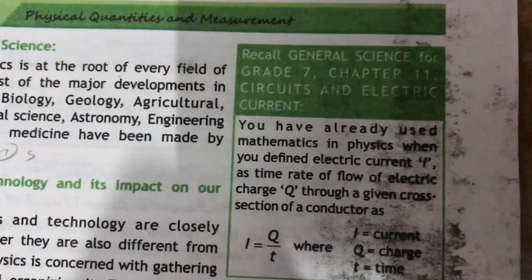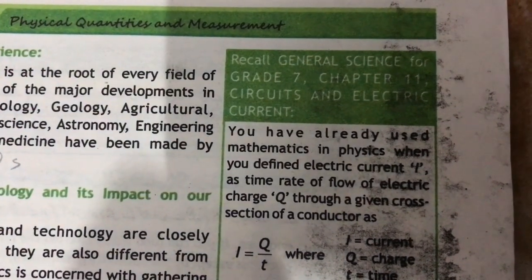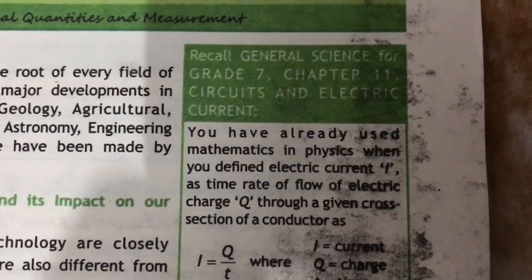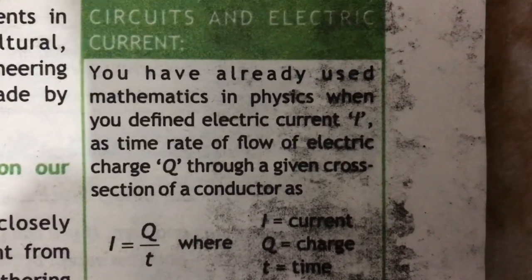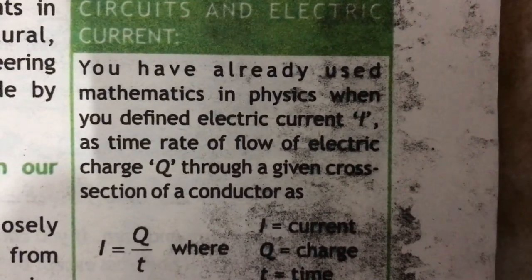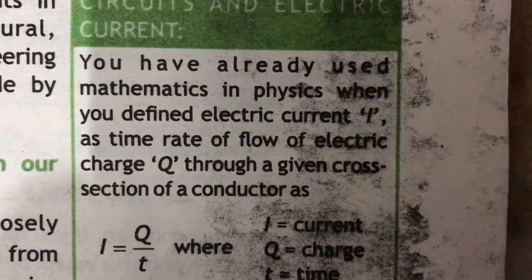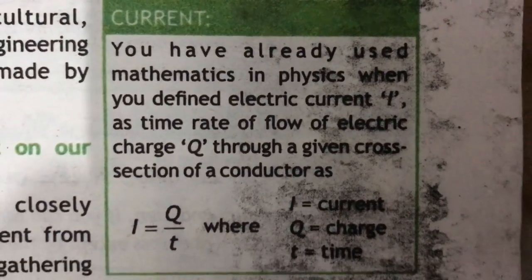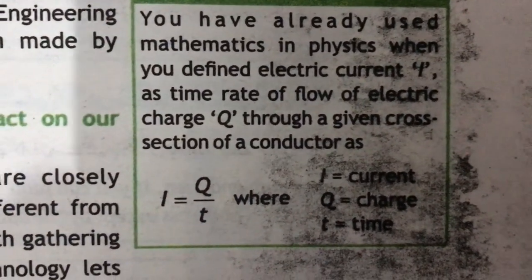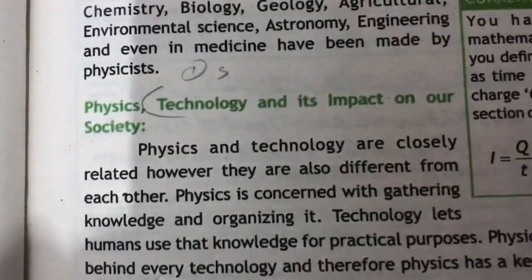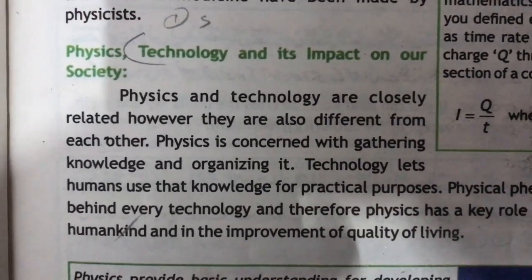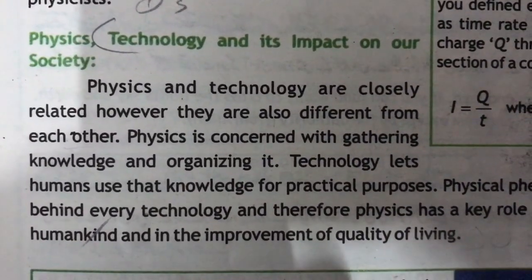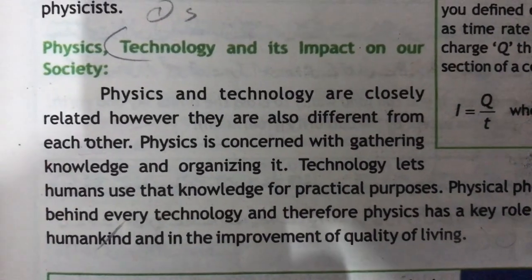Recall general science for Grade 7, Chapter 11: Circuits and Electric Current. You have already used mathematics in physics when you find electric current as the time rate of flow of electric charge Q through a given cross section of a conductor.